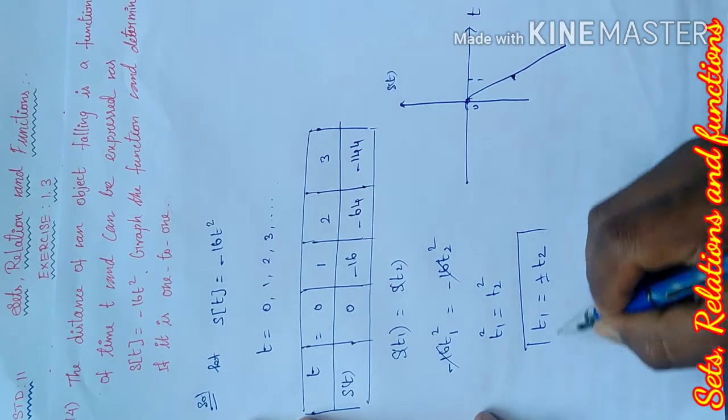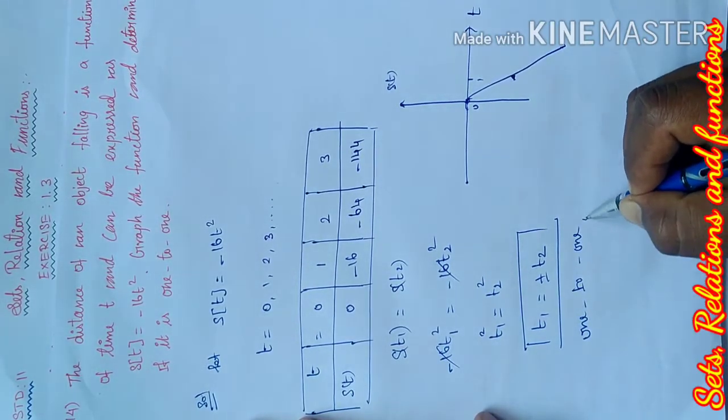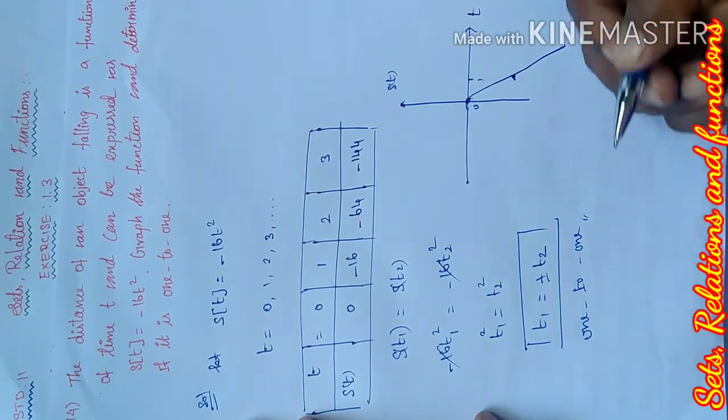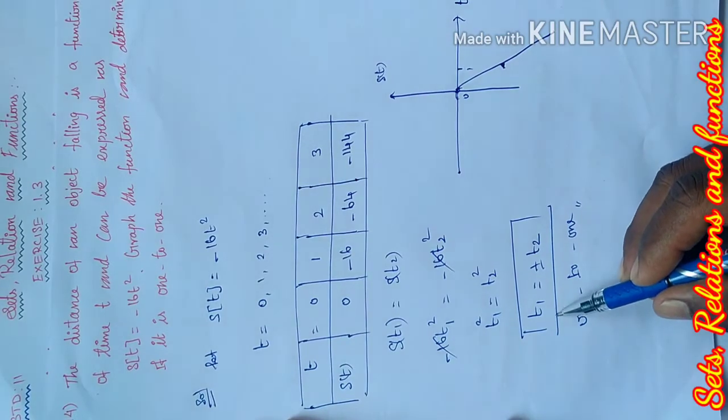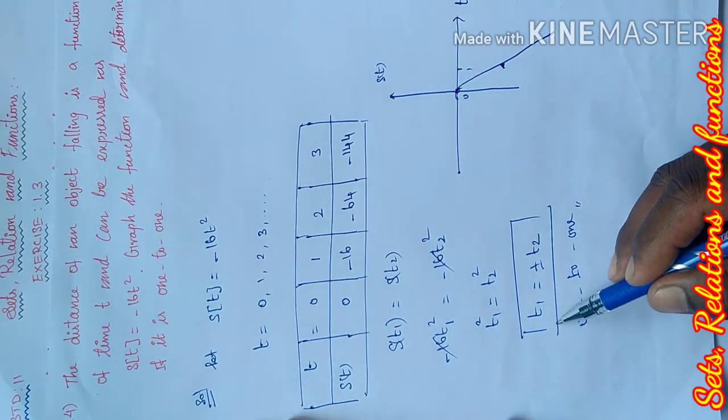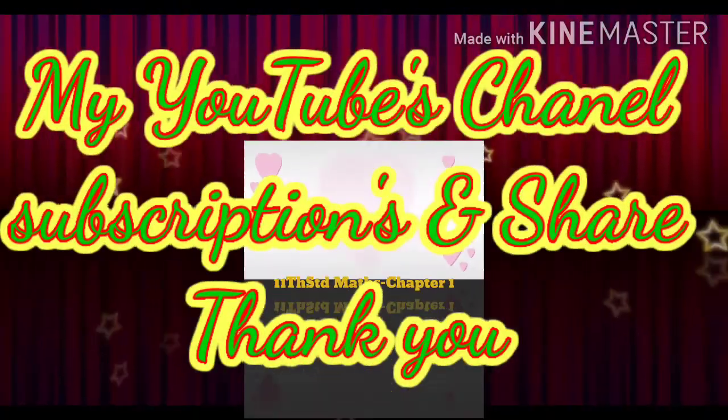Therefore t1 equals plus or minus t2. This is not one-to-one because t1 could equal negative t2. Hence proved, s of t is not a one-to-one function.